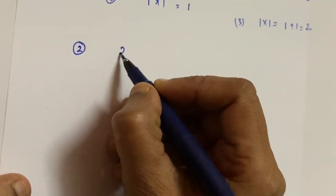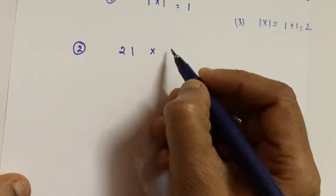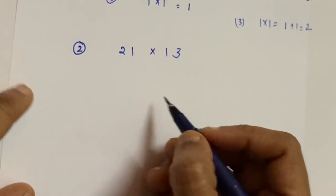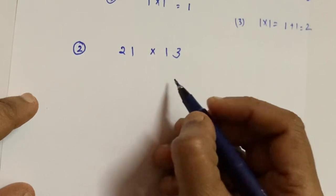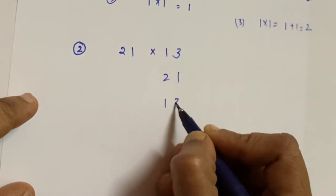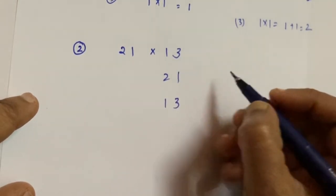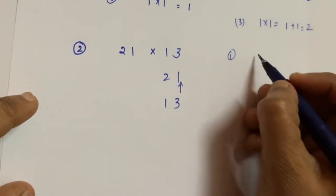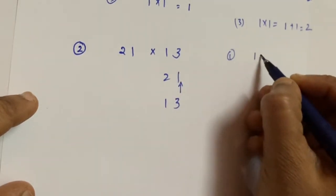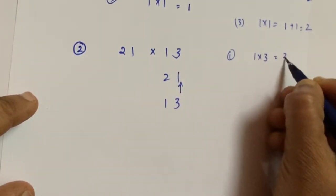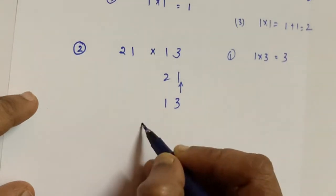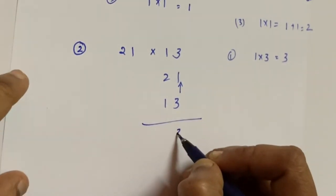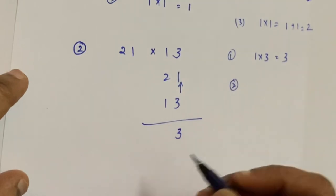For 21 multiplied by 13: the first step is to multiply the units digits — 1 into 3 equals 3. Since this is a single digit, we can write it directly.